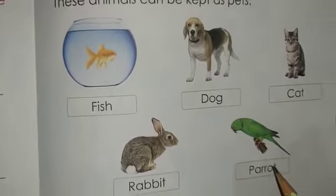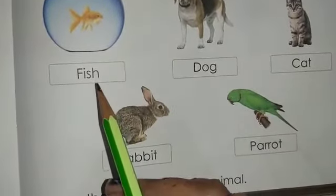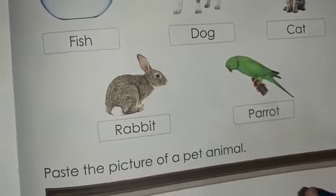Parrot is also a pet animal. So, these are all the examples of all the pet animals. Let's quickly revise them. Fish, dog, cat, rabbit and parrot.